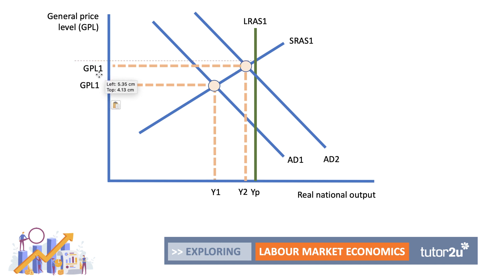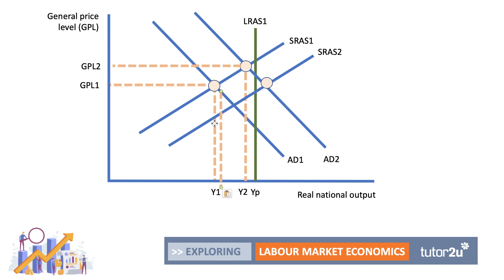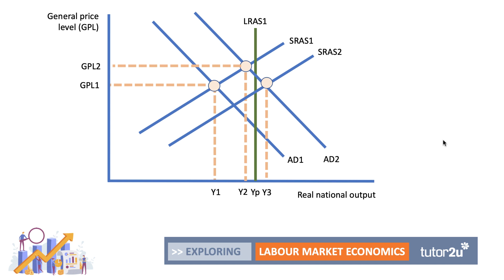Considering the supply side: if migrants are willing and able to work at lower wages, or are higher-productivity workers, aggregate supply might shift outward to the right. This means the economy could achieve higher growth and employment without the risk of inflation. Migration leads to an increase in both aggregate demand and aggregate supply, potentially raising real national income without necessarily causing inflation. Build your diagram to make the point you're trying to make.